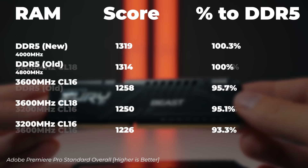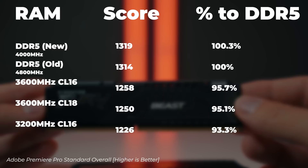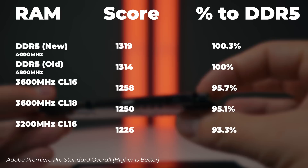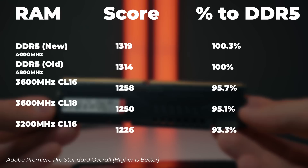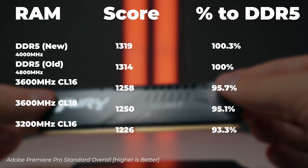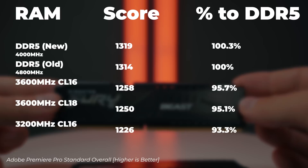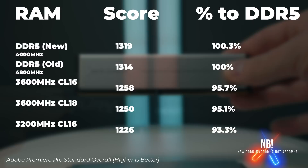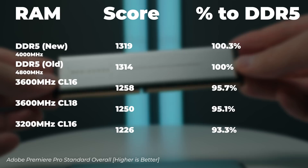Moving to video editing in Premiere Pro using the Pugetsystems overall benchmark score, the newer DDR5 on Windows 11 is 0.3% faster than on Windows 10 — good news because earlier versions were quite a bit slower on Windows 11. So DDR5 and Premiere Pro on Windows 11 have now been optimized together. The 3600MHz CL16 is 4.3% slower; 3600MHz CL18 is 4.9% slower; and 3200MHz CL16 is 6.7% slower.